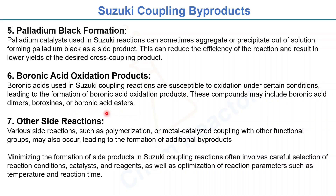Along with these common byproducts, we also see other side reactions including polymerization or metal-catalyzed coupling with other functional groups, which may lead to additional byproducts. To minimize the formation of these side products, careful selection of reaction conditions is needed, including catalyst, reagents, and optimization of parameters such as temperature and reaction time.